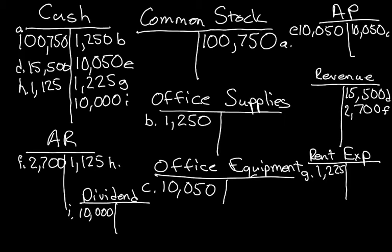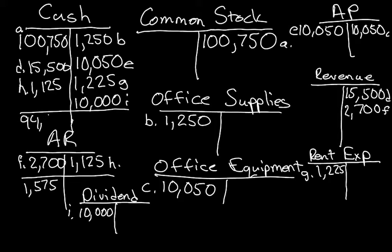The final step is to summarize these accounts. We take the sum of the debits and subtract the sum of the credits — whichever side is larger, that's the balance side. Starting with accounts receivable: $2,700 debit minus $1,225 credit gives $1,575 debit balance. For cash, the debits are larger and the summary balance is $94,850 debit.